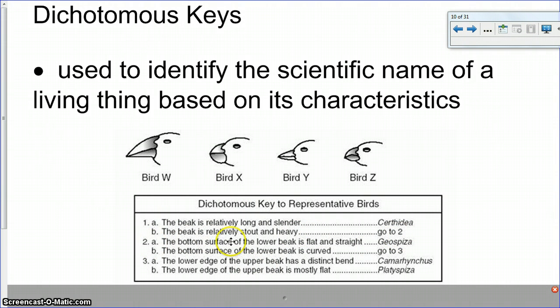So looking at question two, it says the bottom surface of the lower beak is flat and straight or the bottom surface of the lower beak is curved. So to me, these bottom beaks are curved, whereas this one's slightly curved and this one's flat. So to me, this is the bottom surface of the lower beak is flat and straight. So the genus name of this bird would be Geospiza.